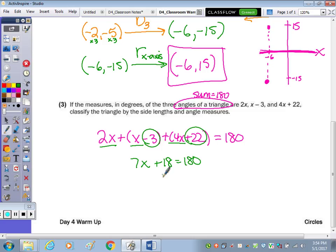Subtract the 18, and we have 7x equals 161, divide by 7,